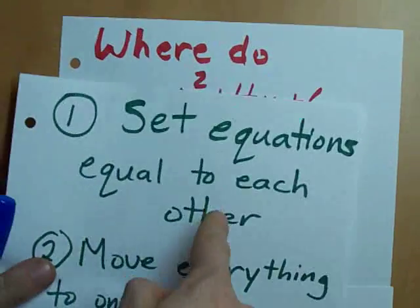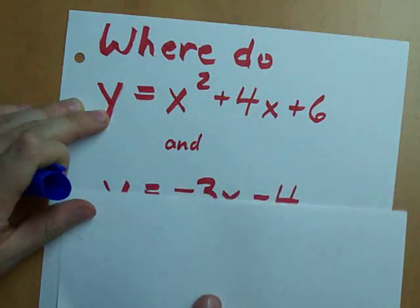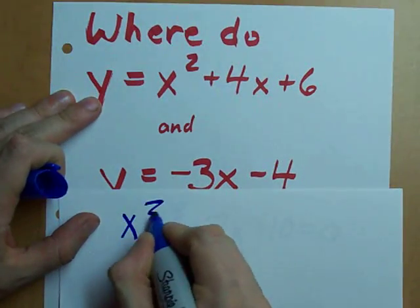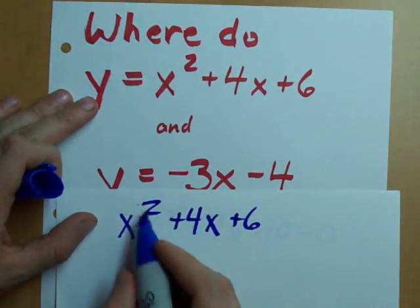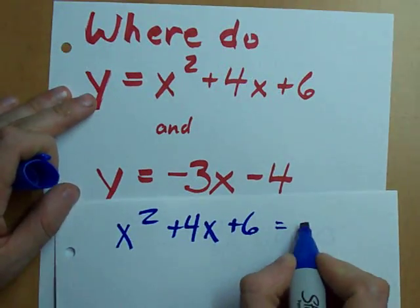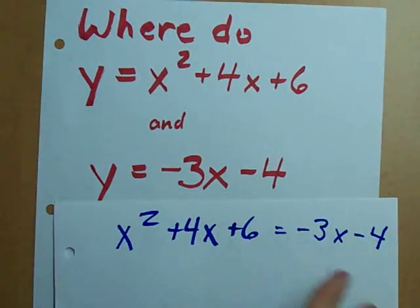Number one, set the equations equal to each other. Here we go. We've got x squared plus 4x plus 6 equals the other equation, negative 3x minus 4. Step one, done.